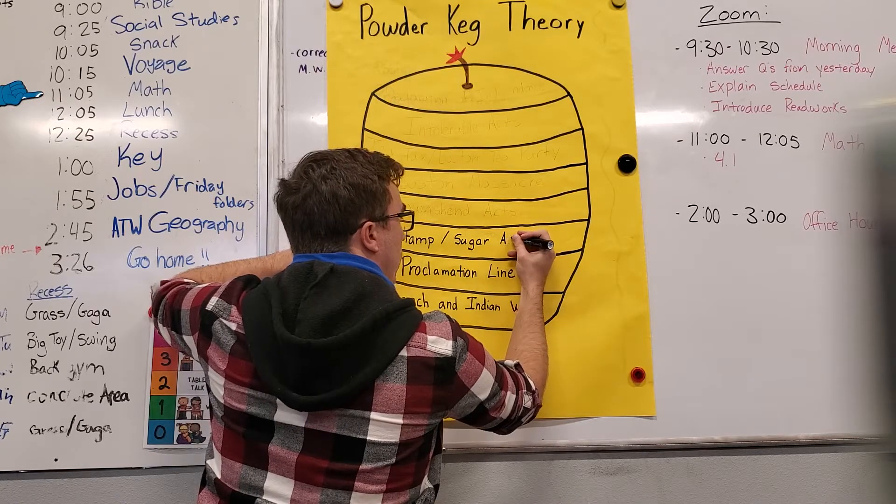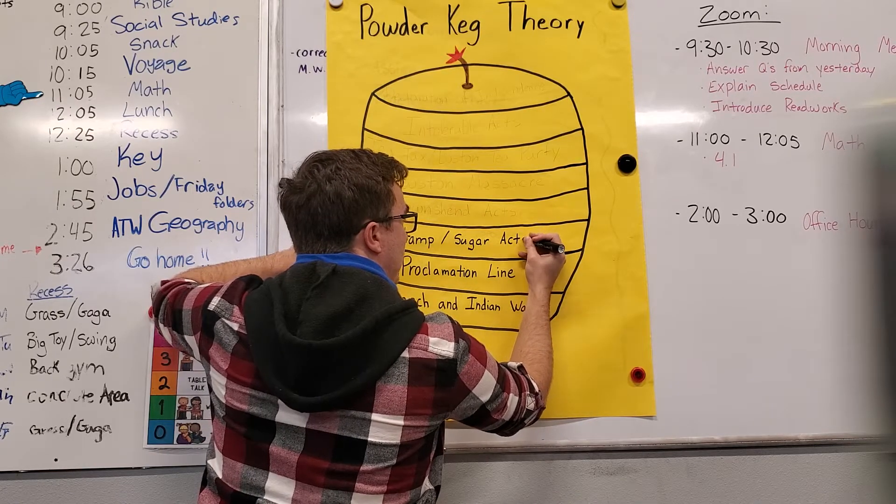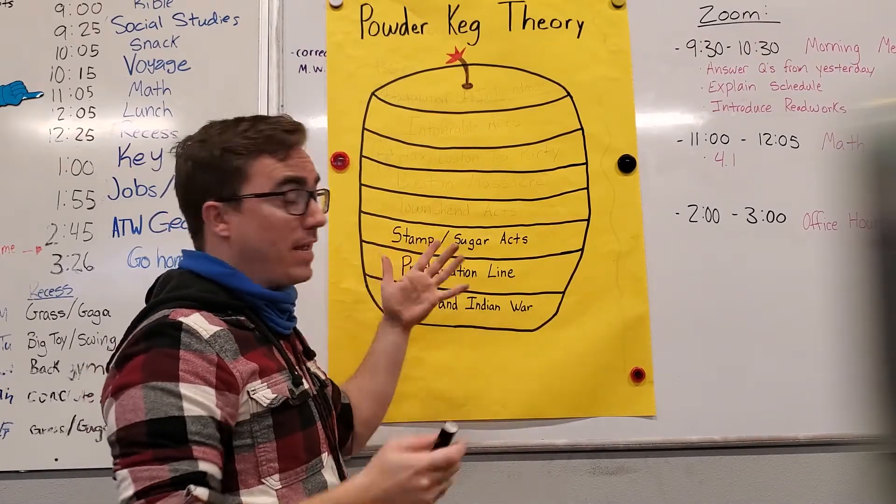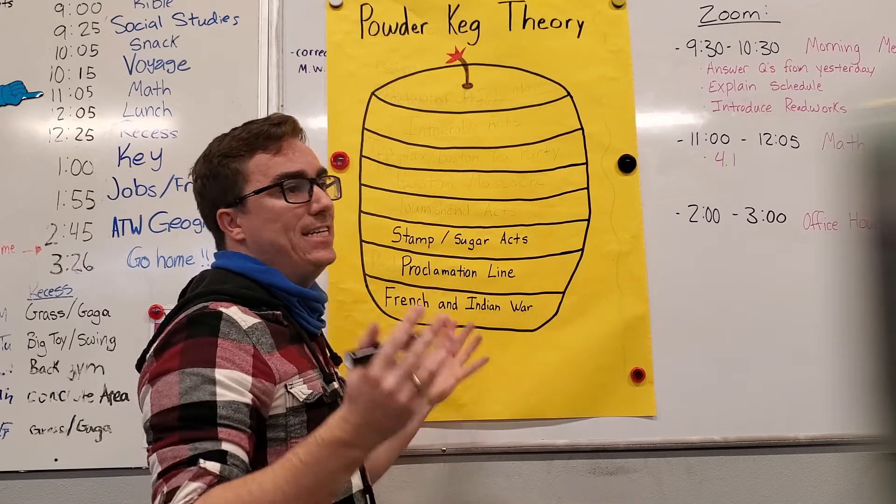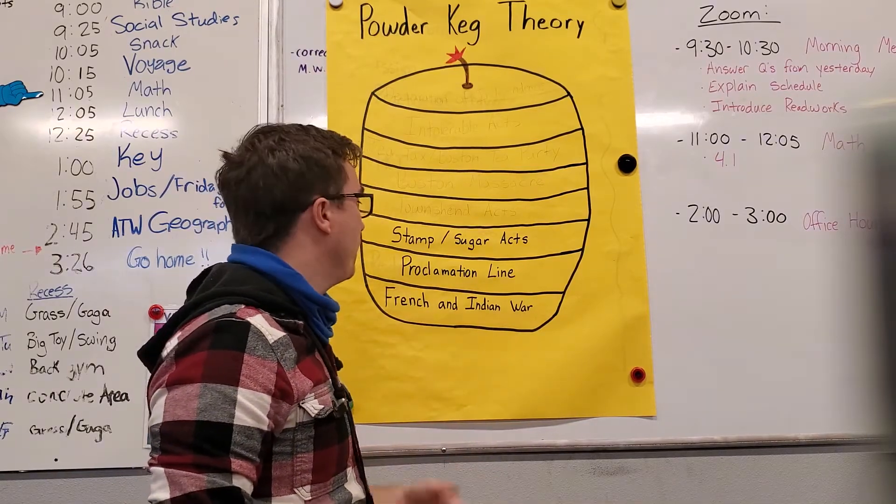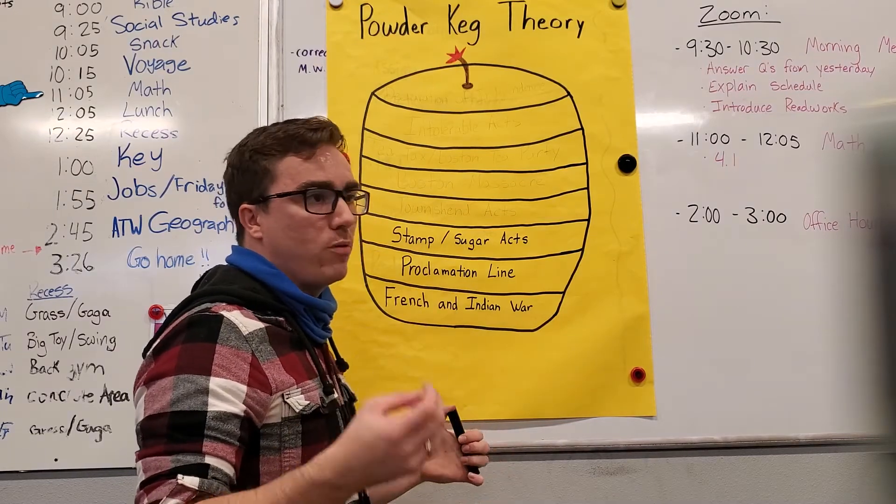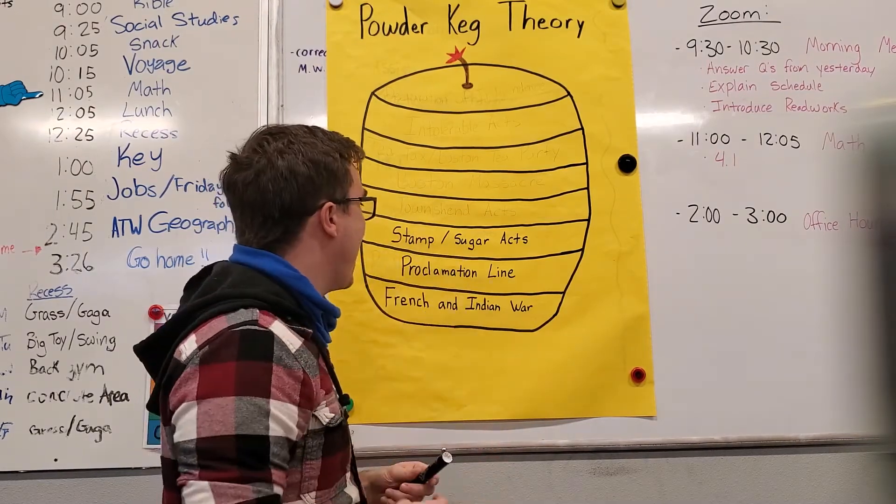And the sugar act is also called the molasses act. But anything with paper, playing cards, a deed to a house, not toilet paper, but any type of paper, it had a stamp on it. And then sugar act was pretty straightforward. Whenever you bought sugar, it now had a new tax.